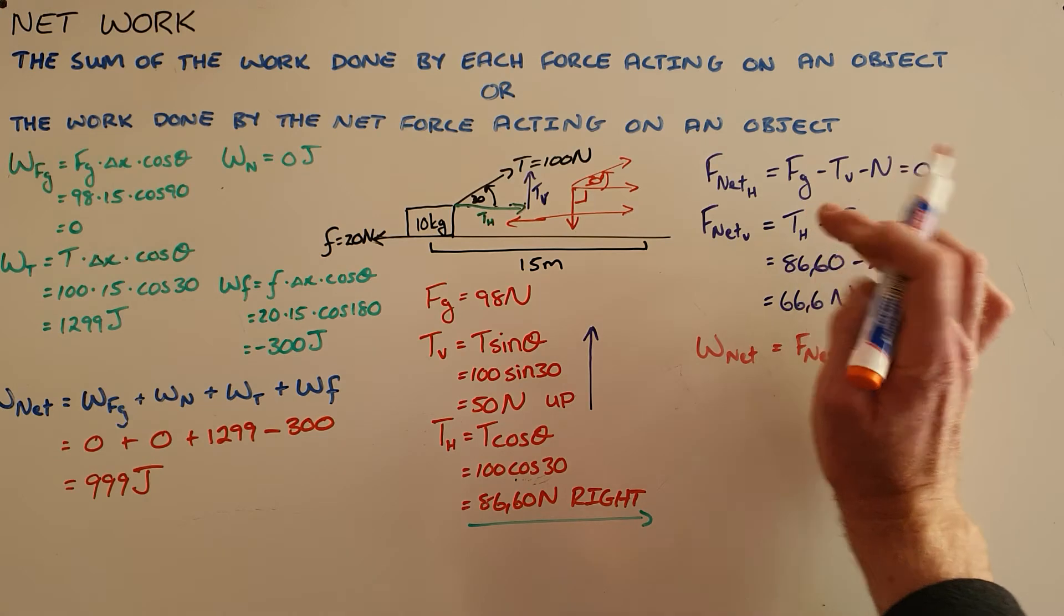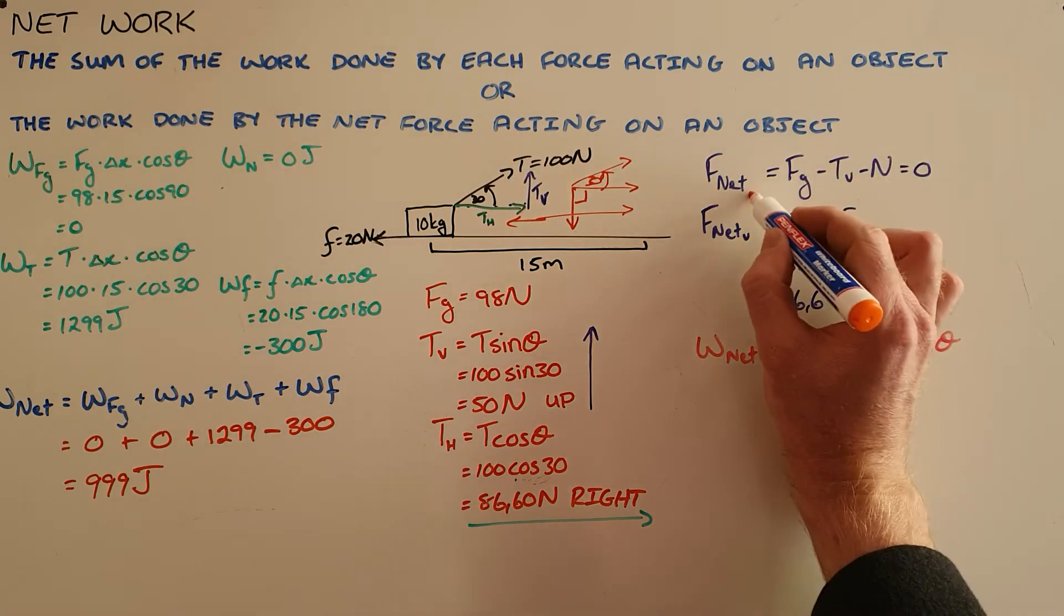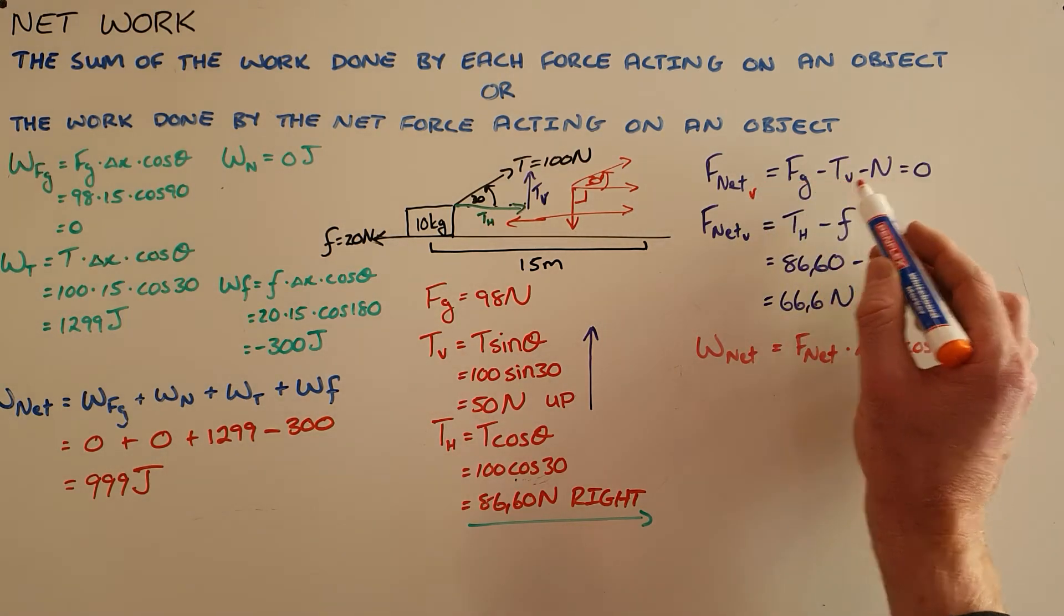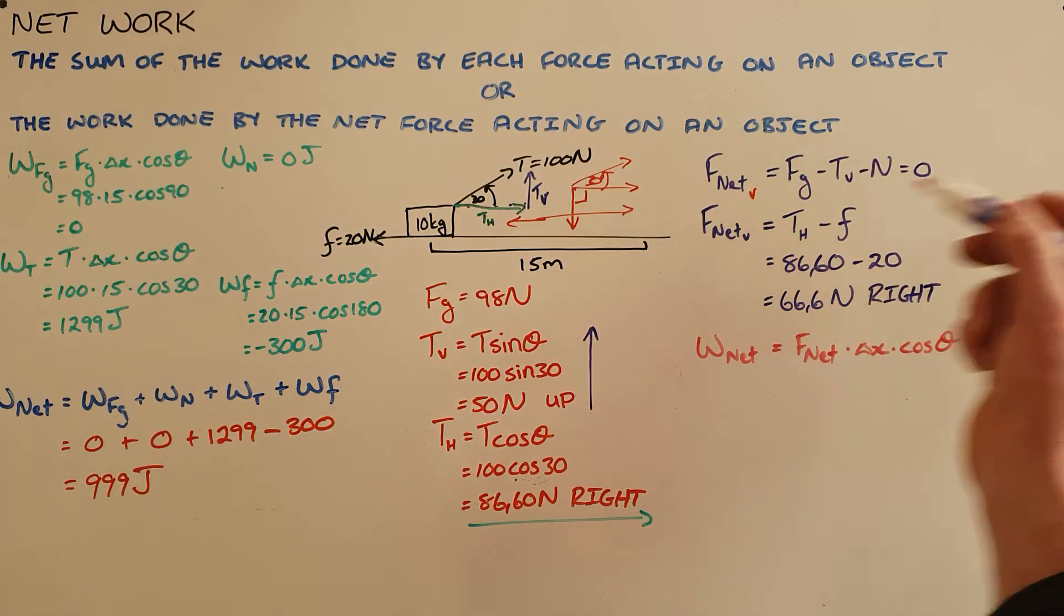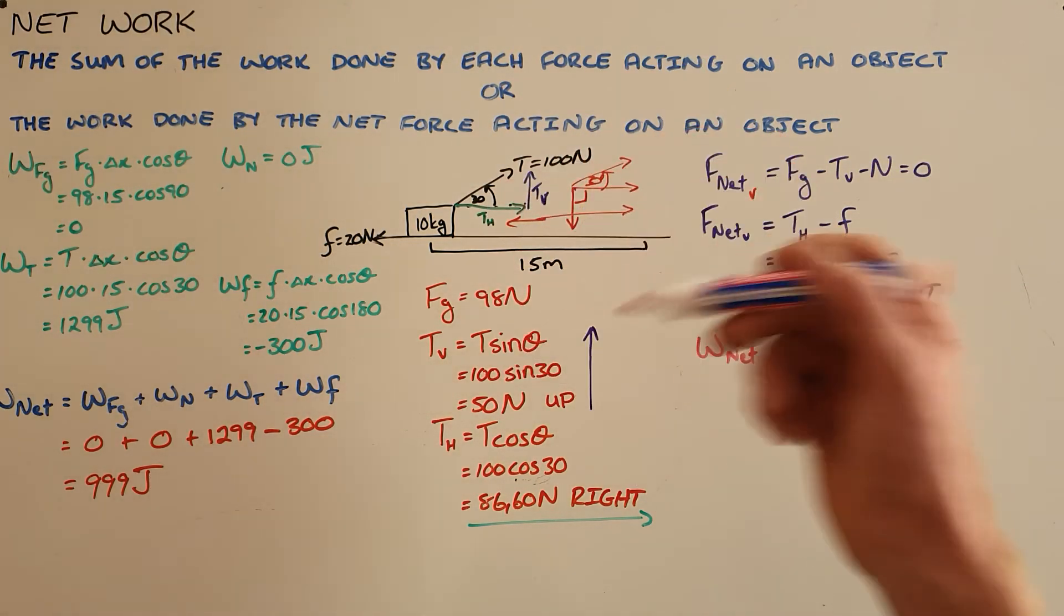We can see that in the vertical plane there is a force of gravity, a tension force vertical component, and a normal force. The result there is zero because this object is not moving upward or downward.